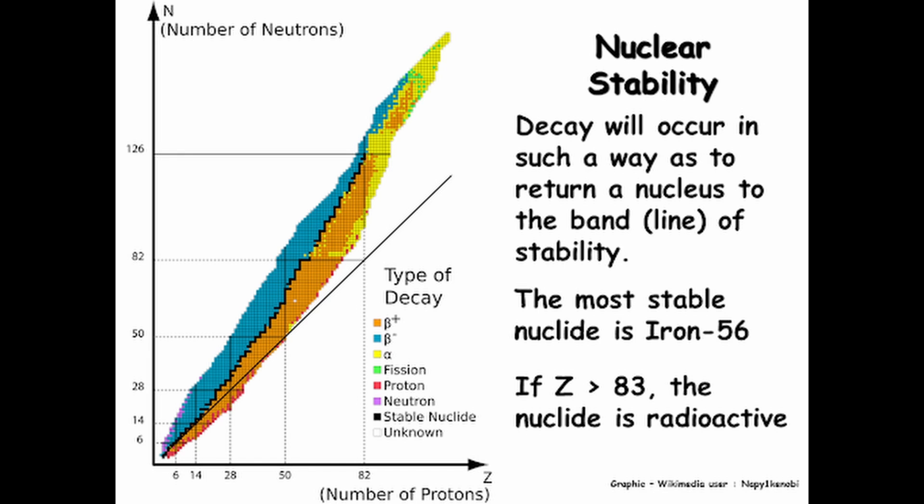But is it unlimited? Can you just have neutrons galore? No, you can't, and that's what this band of stability shows us.